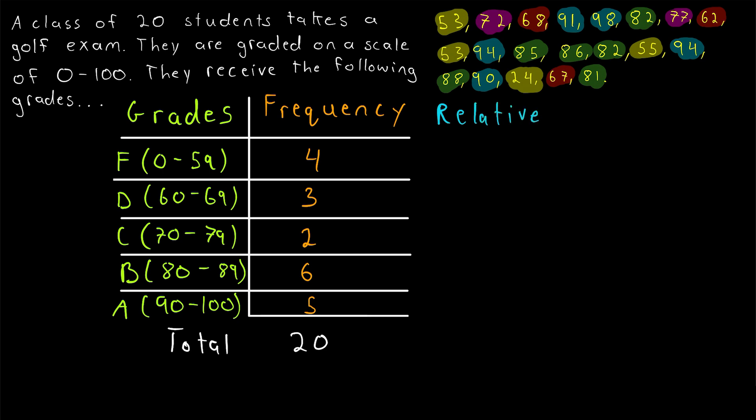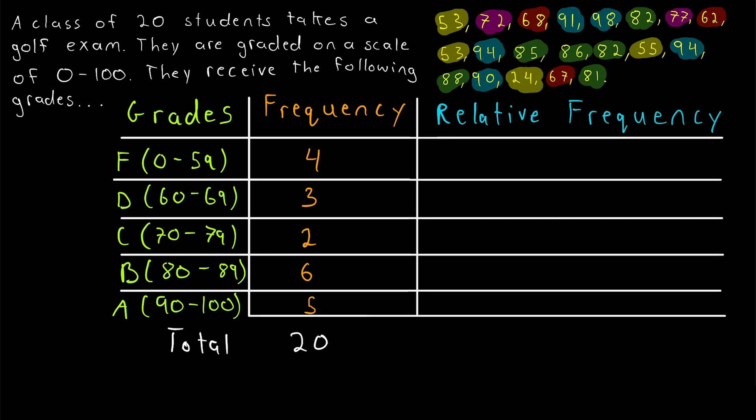And now my friends we are almost done. We just need one more column now for the relative frequency to complete this relative frequency table. Remember that the relative frequency column contains the frequency of each data point or each data category. The frequency relative to the total. Which means for each row we just take the frequency. So 4. The number of F's. And divide that by the total. The total 20 number of grades.